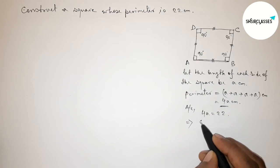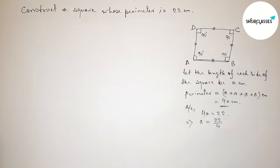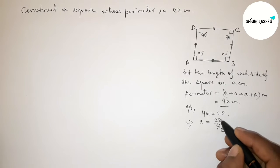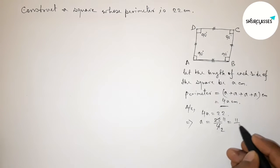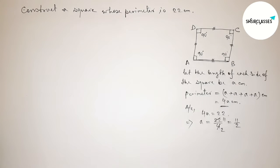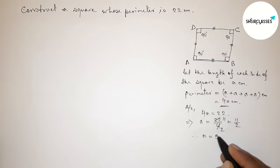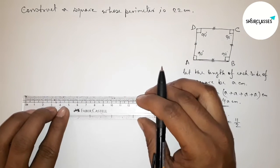Now simplifying: a = 22 divided by 4. Dividing both numerator and denominator by 2 gives a = 11/2. Therefore, a = 5.5 centimeters.